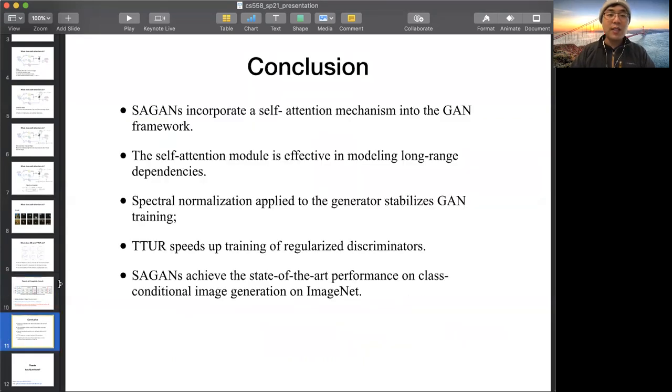In conclusion, this paper incorporates a self-attention mechanism into GAN frameworks. The self-attention model is effective in modeling long-range dependencies. Spectral normalization applied to the generator stabilized GAN training. TTUR speeds up training of regularized discriminators. This model achieves the state-of-the-art performance on class conditional image generation on ImageNet. Thank you.